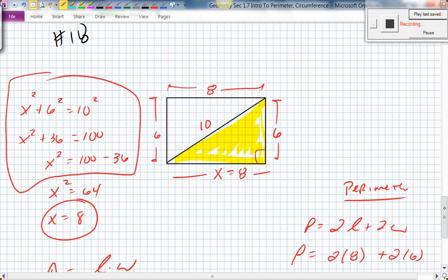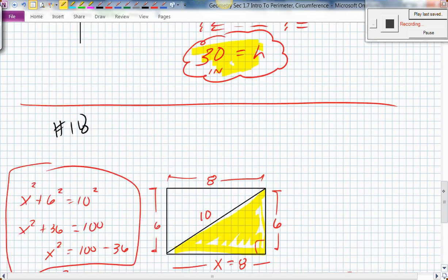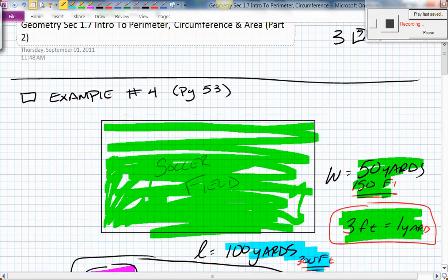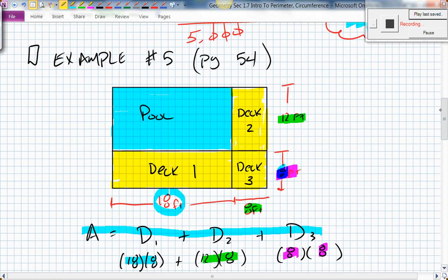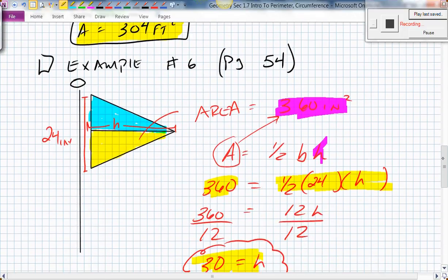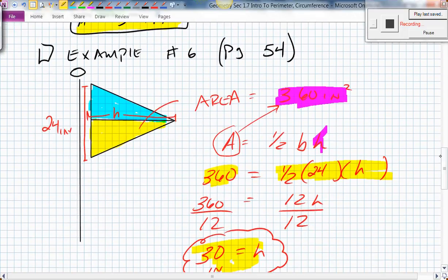And then we did problem number 18, work that one out in the book. Okay, so the second half of geometry today was example number four on page 53, example number five on page 54, and finally, example number six on page 54. Okay, hope that helps you out.